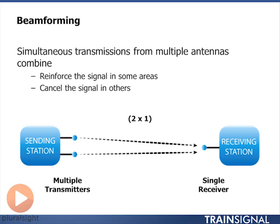One last important thing about beamforming before we move on: I typically talk about beamforming in the transmit mode because it's easier to understand, but antennas are reciprocal. That means I can form beams for transmitting and I can form beams for receiving. A receive beam means I focus my antennas to receive energy from a specific direction, and therefore I'm not going to receive interference from things that are outside of that beam.